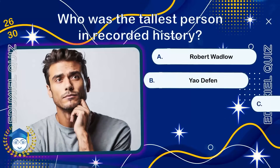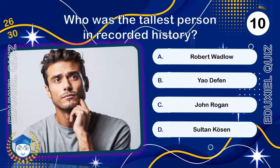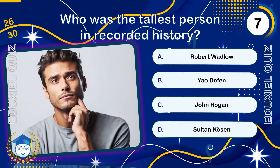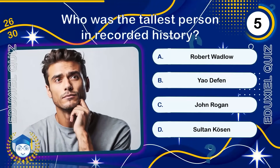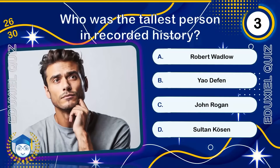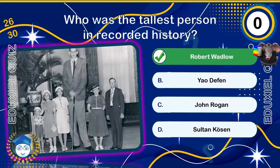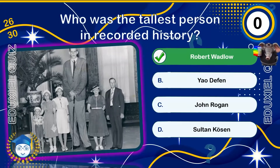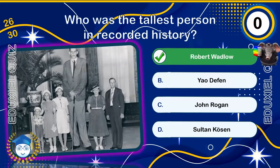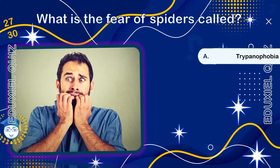Who was the tallest person in recorded history? Robert Wadlow, known as the Alton Giant, was the tallest man in recorded history at 2.72 meters (8 feet 11 inches). His extraordinary growth was caused by a pituitary gland disorder leading to excess growth hormone. He required custom-made clothing and braces to walk.